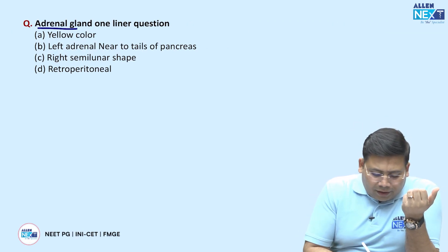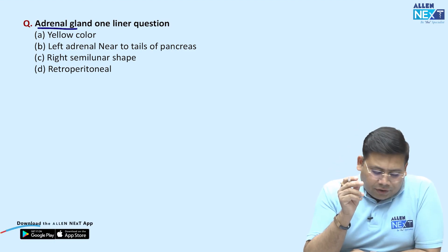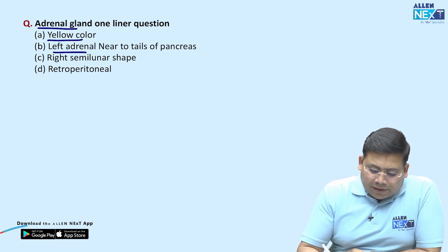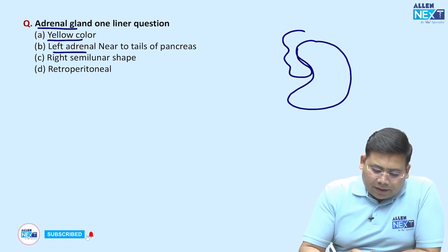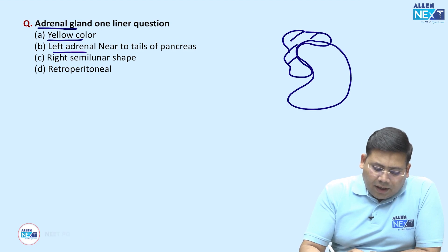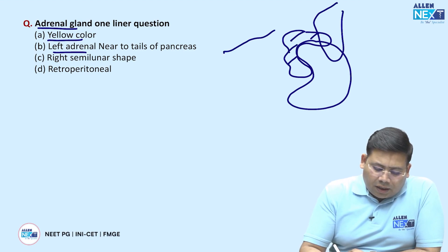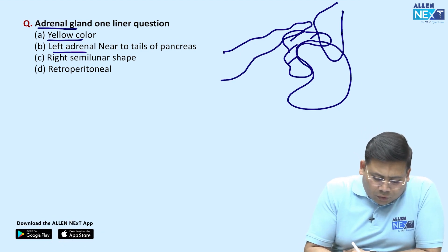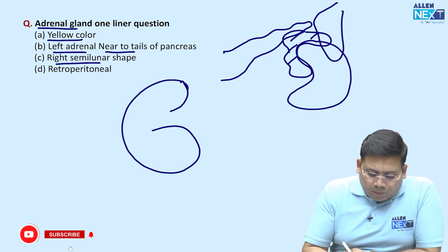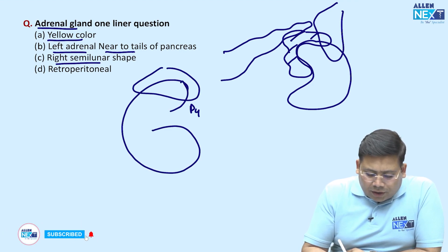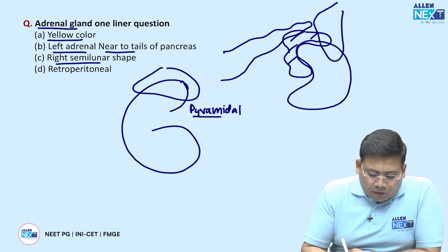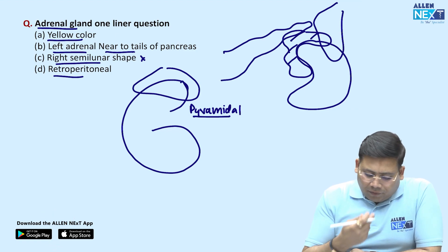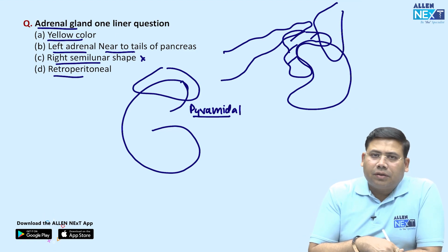There was a question on the adrenal gland — a one-liner about its color. Yes, it is yellow in color. The left adrenal is near to the pancreas; the adrenals are crescent-shaped, and the spleen is nearby. The left adrenal is close to the tail of the pancreas. The right adrenal is pyramidal in shape — it is not a semilunar organ. They are retroperitoneal. So option C is incorrect here.